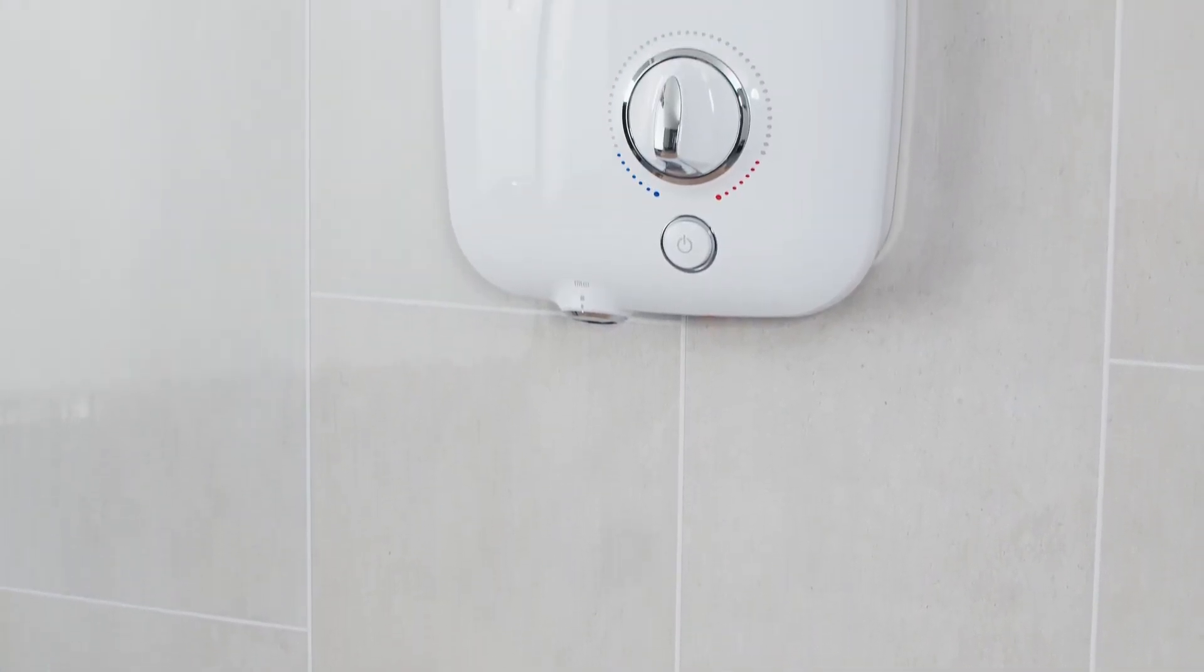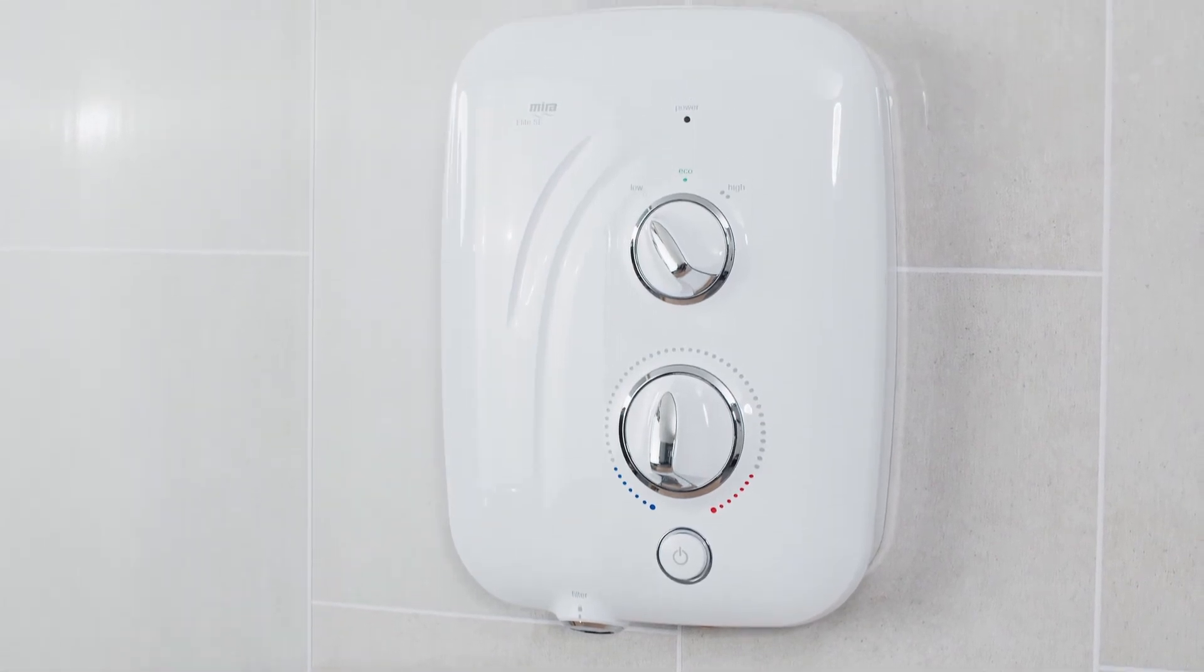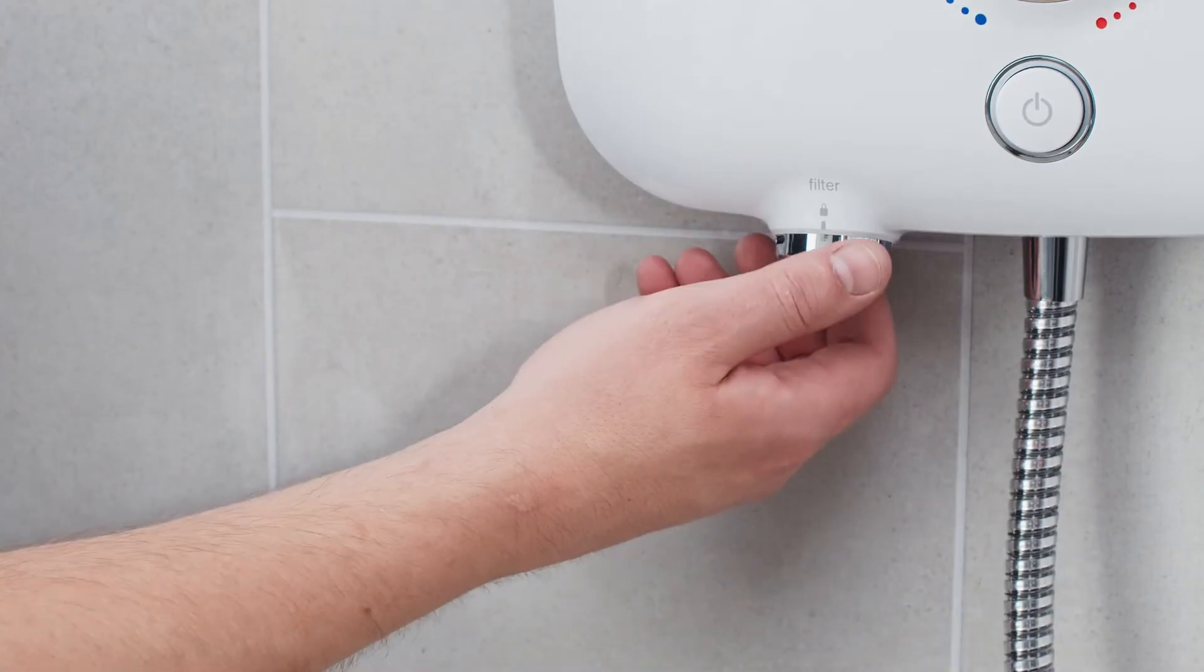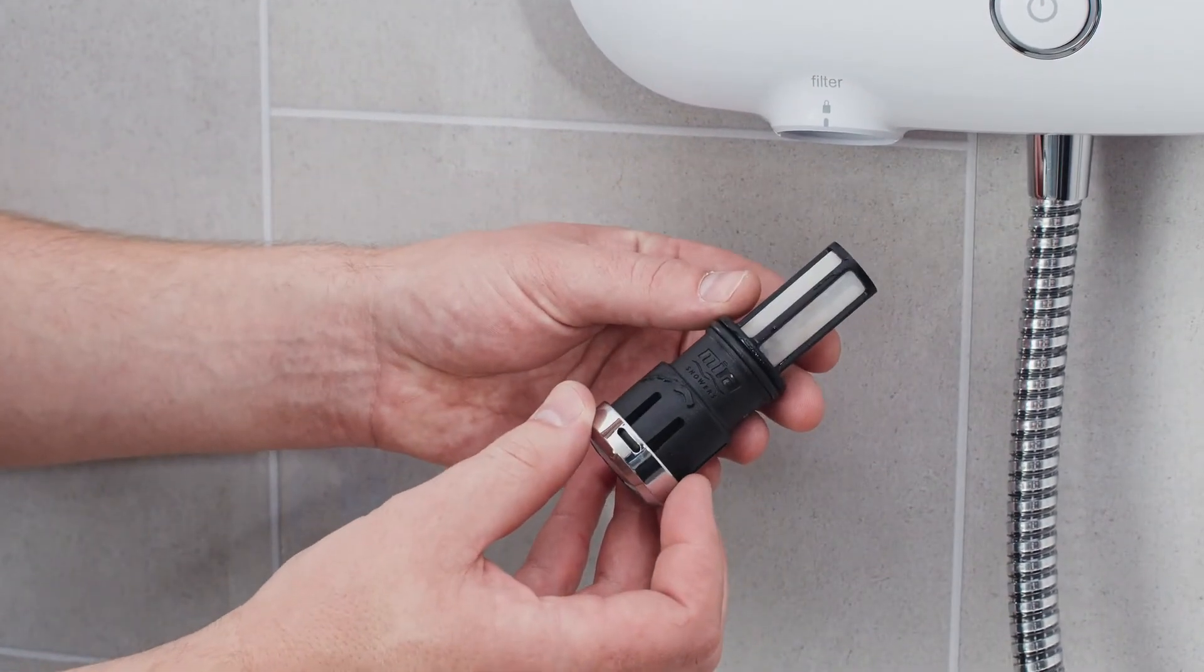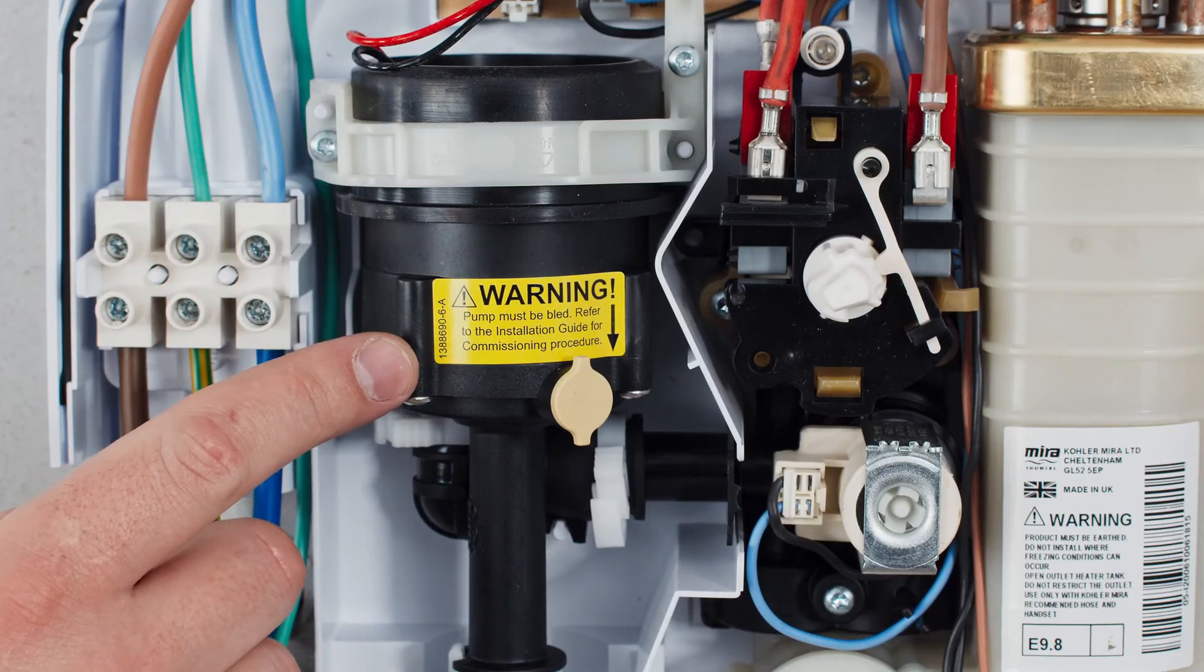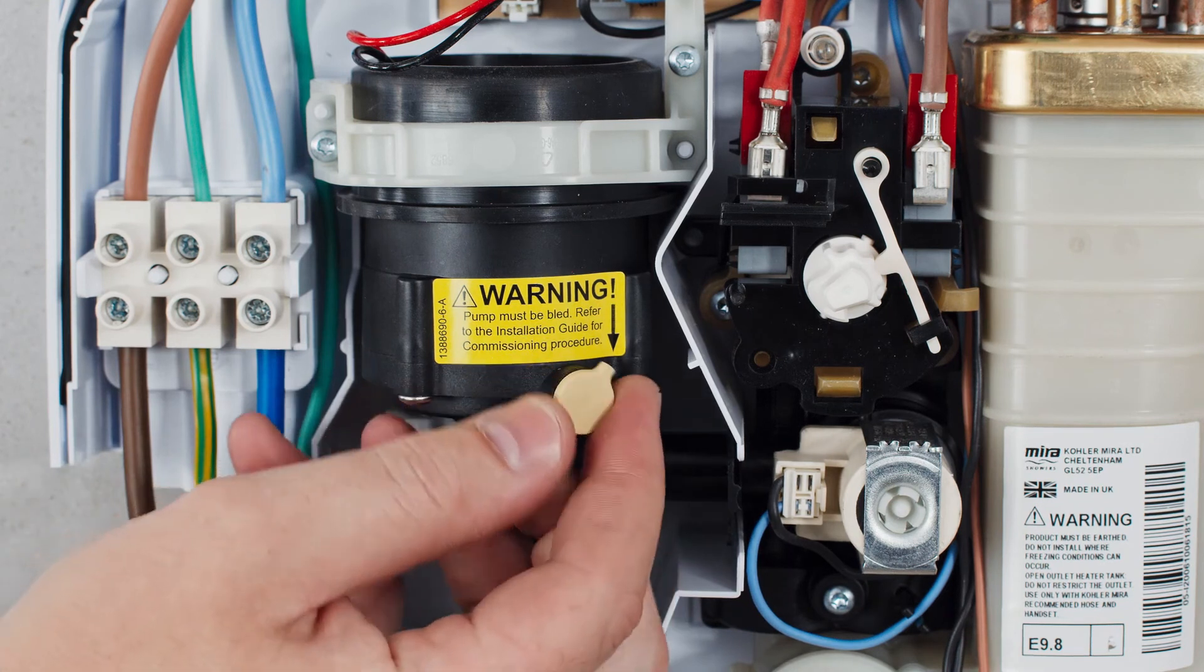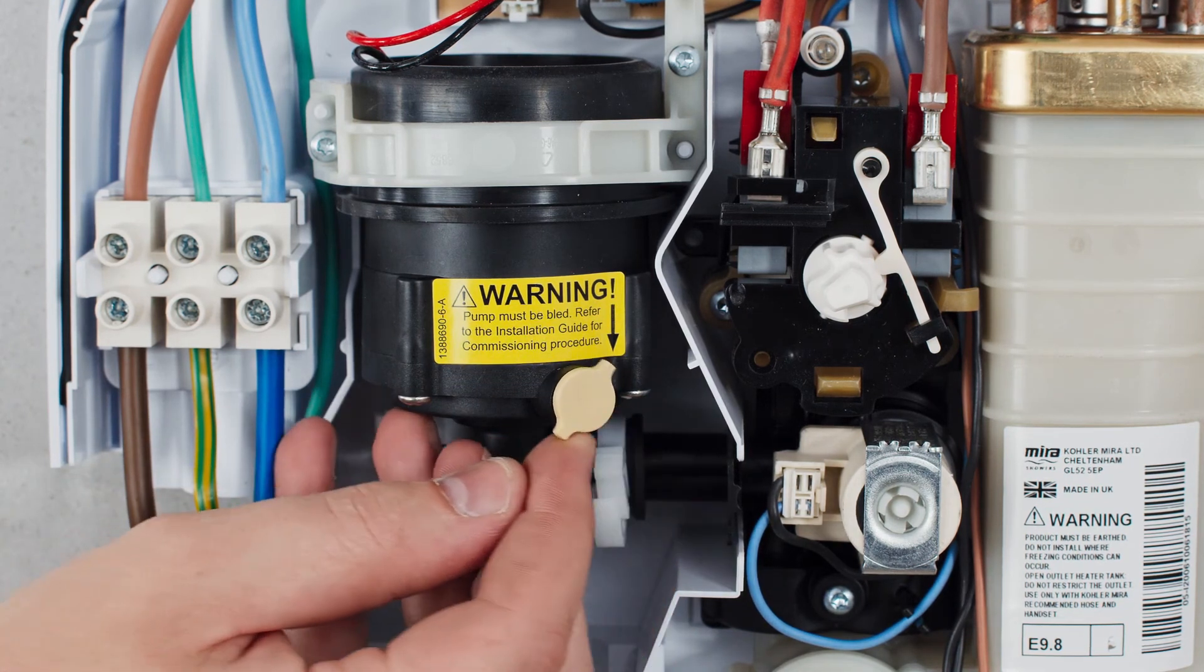Before reinstating the electrical supply, the Myra Elite SE must always be commissioned post installation. This is made easy using the clean flow filter and bleed valve located on the pump housing. Full details can be found in the installation manual.